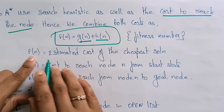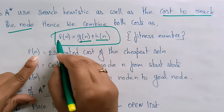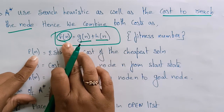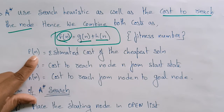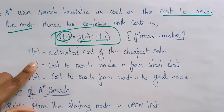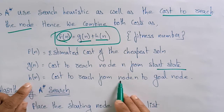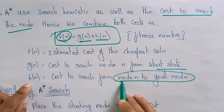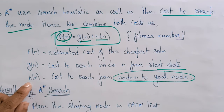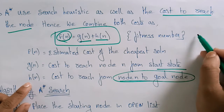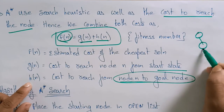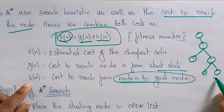f(n) is the estimated cost of the cheapest solution — whichever path has the least cost. g(n) is the cost to reach node n from the start state, and h(n) is the cost to reach from node n to the goal node. That is the heuristic value — it is the estimated cost from node n to the goal node.